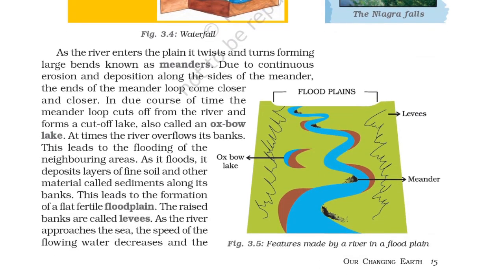As the river enters the plain it twists and turns, forming large bends known as meanders. Due to continuous erosion and deposition along the sides of the meanders, the ends of the meander loops come closer and closer. In time the meander loop cuts off from the river and forms a cut-off lake called an oxbow lake. At times the river overflows its banks, leading to flooding of neighboring areas. As it floods, it deposits layers of fine soil and other materials called sediments, forming a flat fertile flood plain. The raised banks are called levees.